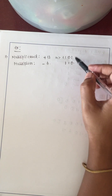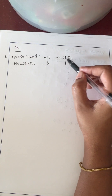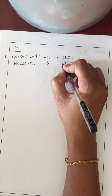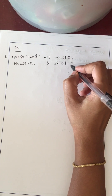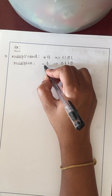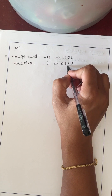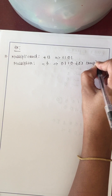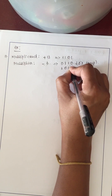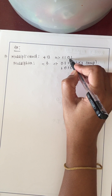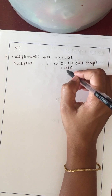Since the bit lengths differ, normalize by adding a leading 0 to make 6 become 0110 — now both are 4 bits. Since +13 is positive, its binary remains 1101. Since -6 is negative, take the 2's complement of 0110, giving 1010. We have now found the binary values of +13 and -6.